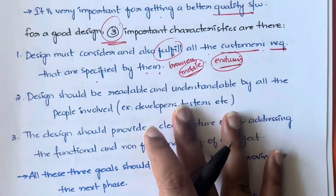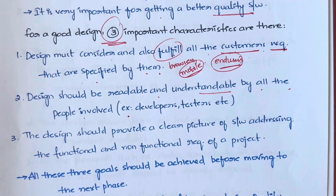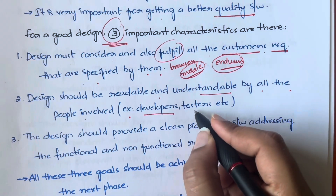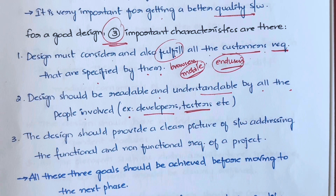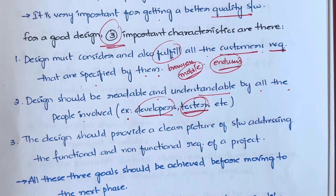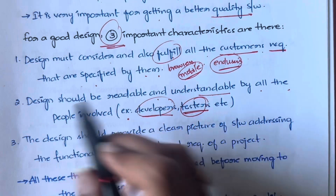Next, a design should be readable and understandable by all the people involved. After designing, coding will start — developers will do the coding, and then the testing or QA team will test it. The design should be understandable by developers so they can develop from it, and by testers so they can come up with different scenarios to test. Everyone involved in development, execution, and deployment should be able to understand and read that design — it should not be complex, it should be very simple.